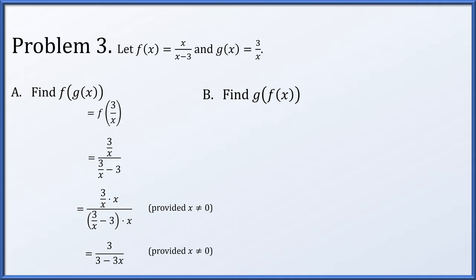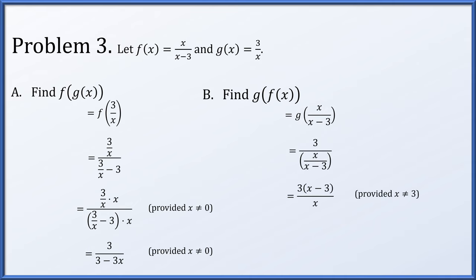For g(f(x)), we do this in the opposite order. Since f(x) = x/(x-3), we have g of that, which is 3 over that expression. Provided x ≠ 3, we can reciprocate and multiply to get (3x - 9)/x. Since 3 is not in the domain of f to begin with, it cannot be in the domain of g(f(x)) either.